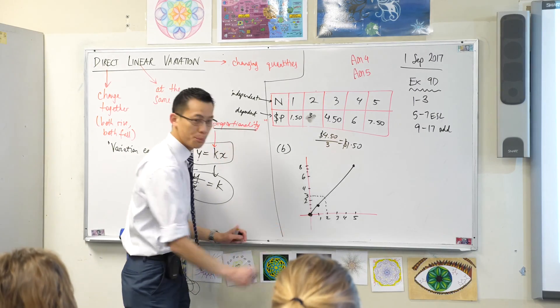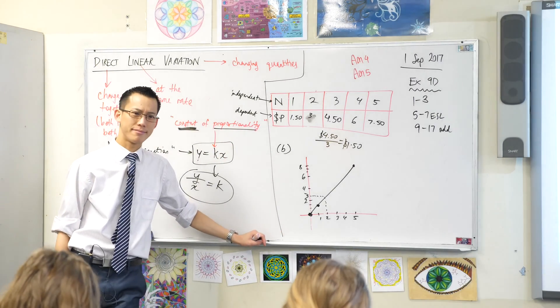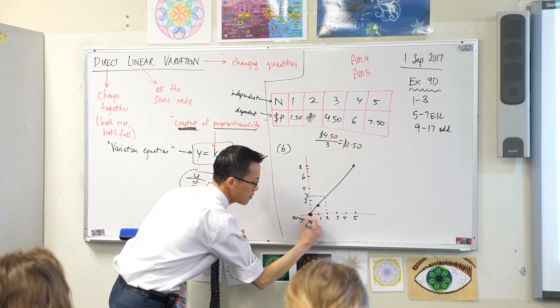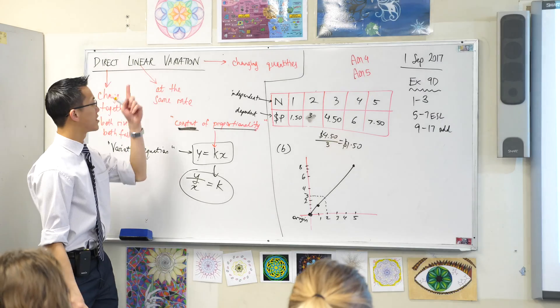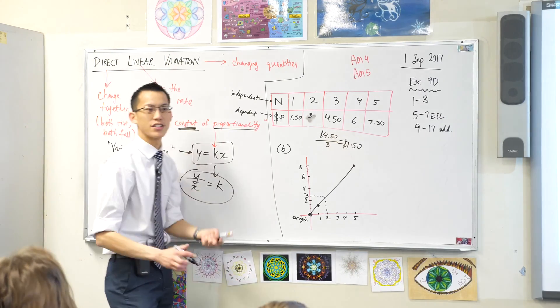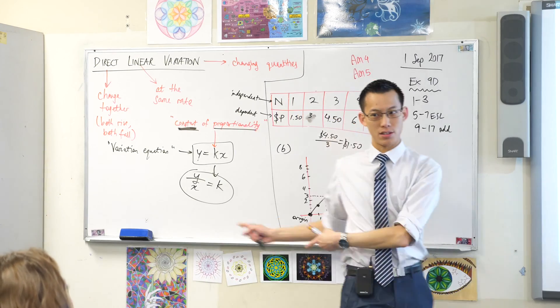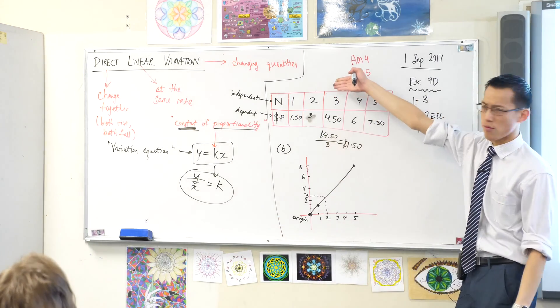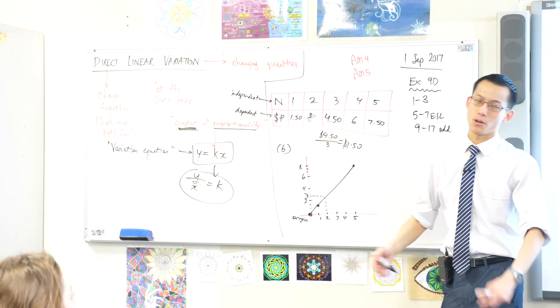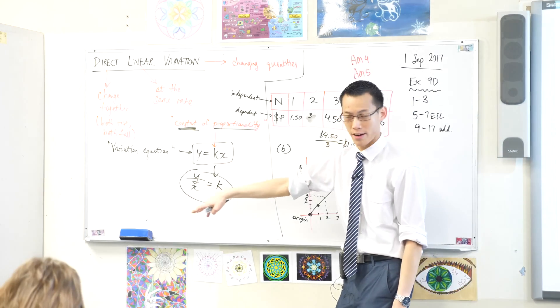But secondly, have a look at where this graph begins. What is that spot? It's zero zero. It's the origin, right? Now this is really important because it's a feature of all direct linear variation situations. Every single one passes through the origin. Because if you've got none of one thing, if you didn't buy any pencils, then it's not gonna cost you any money or whatever kinds of two quantities you're comparing.